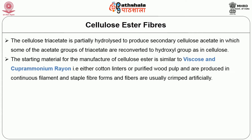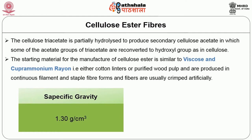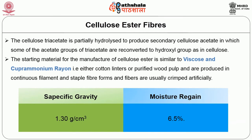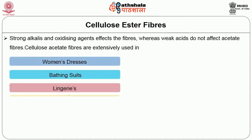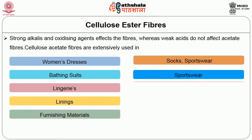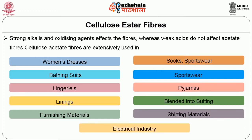The cellulose acetate fiber is manufactured in which the hydroxyl OH groups are replaced by acetate. The secondary acetate fibers are soluble in relatively cheap solvents such as acetone. Cellulose triacetate is partially hydrolyzed to produce secondary cellulose acetate, in which some of the acetate groups of triacetate are reconverted to hydroxyl groups. The starting material is similar to viscose and cupramonium rayon — either cotton linters or purified wood pulp. The fibers are produced in continuous filament form and staple fiber form. Its specific gravity is about 1.3 grams per cubic centimeter. Moisture regain under standard conditions is about 6.5%. Strong alkalis and oxidizing agents affect the fibers, whereas weak acids do not. Cellulose acetate fibers are extensively used in women's dress wears, bathing suits, lingeries, linings, neckties, socks, sports wears, pajamas, blended into suitings and shirting materials, furnishing materials, and also in the electrical goods industry because of its good electrical insulation properties.